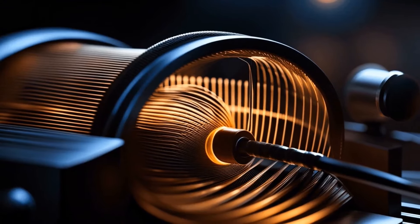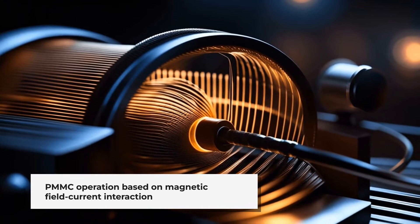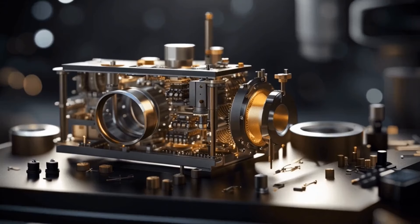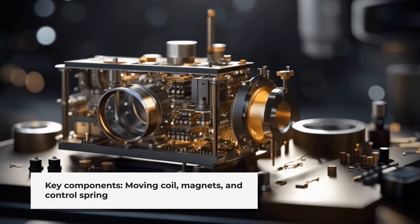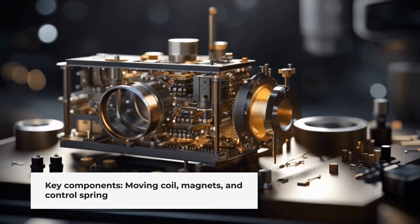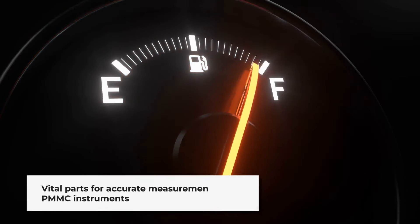This principle is the cornerstone of the PMMC's operation, allowing it to measure electrical quantities with precision. The construction of a PMMC instrument involves several key components, including the moving coil, permanent magnets, and a control spring. Each part plays a vital role in ensuring accurate measurements.